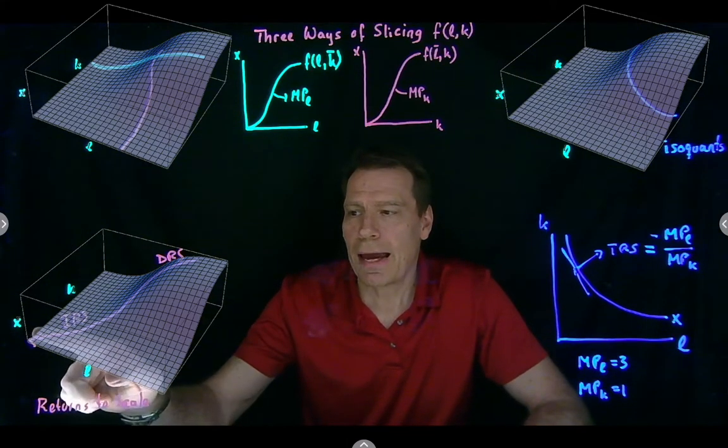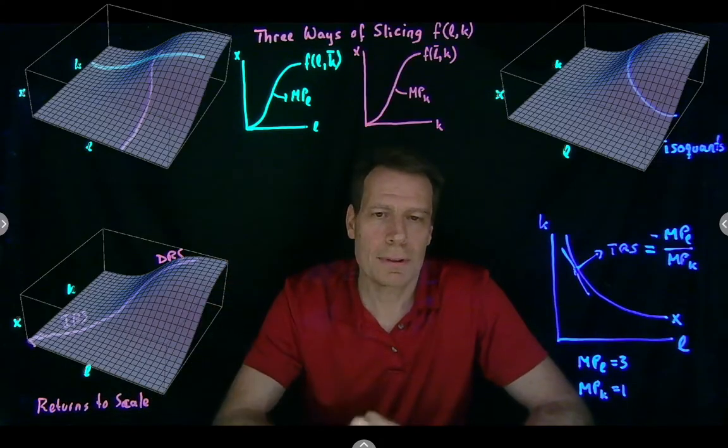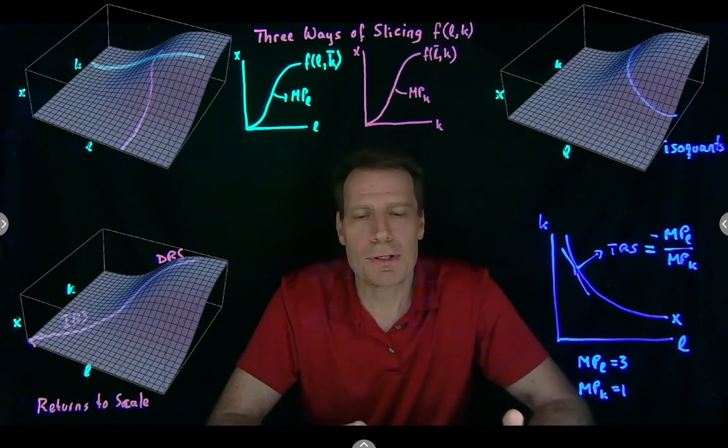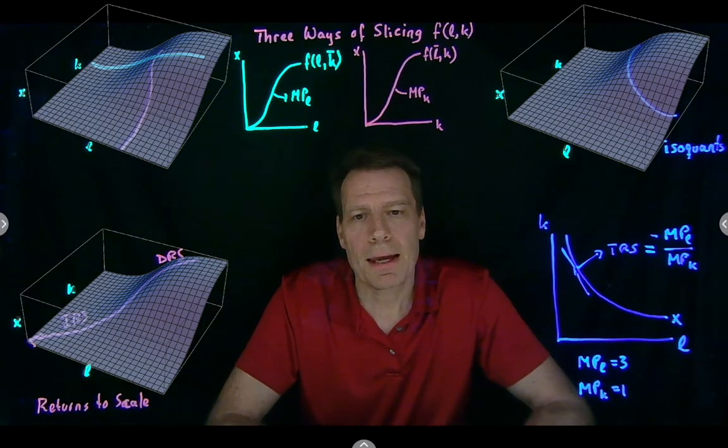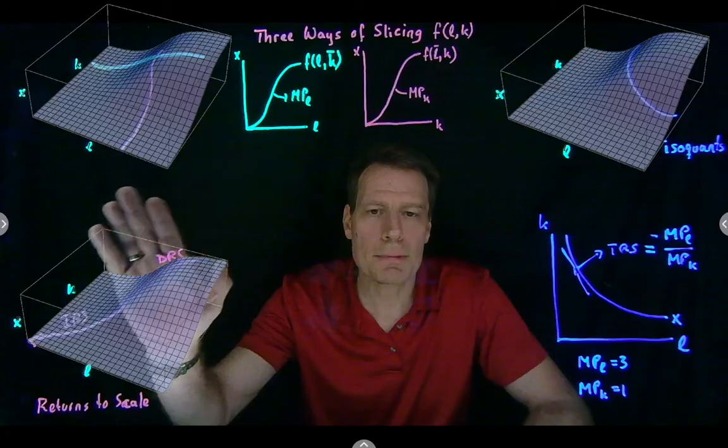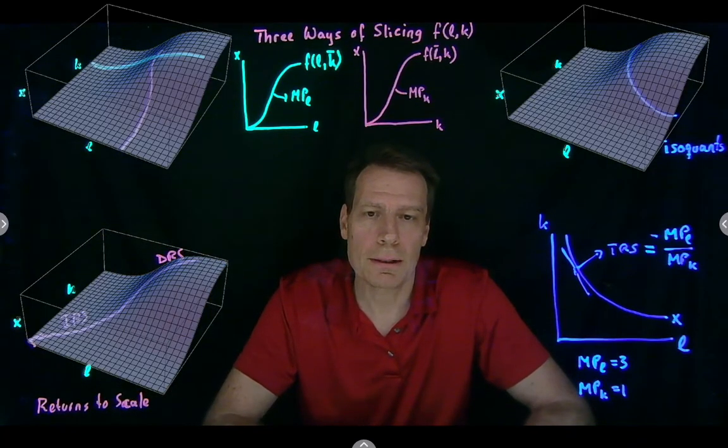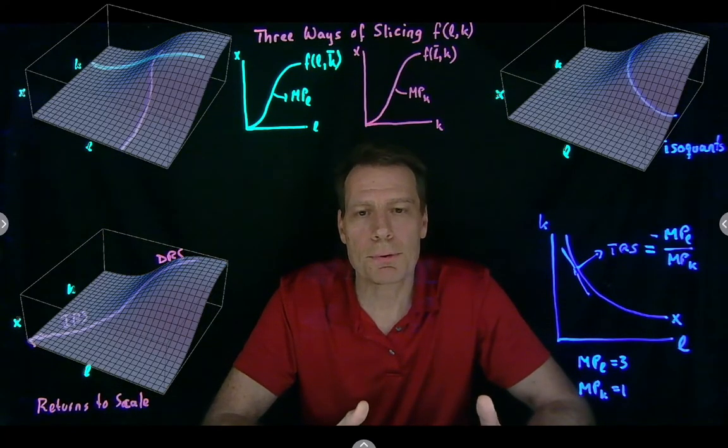Similarly, as we climb the utility mountain, how we climb, whether it's getting steeper or shallower, really depends on how we're measuring utility. And so these vertical slices were not meaningful in the consumer model. They now become meaningful in the producer model because what we measure on the vertical axis is objectively measurable.